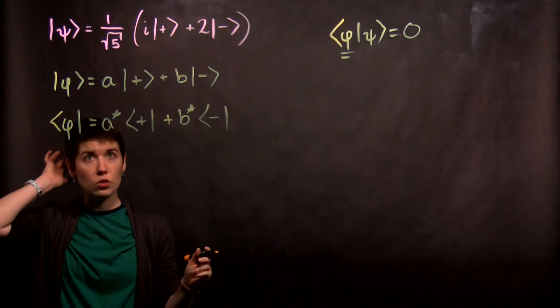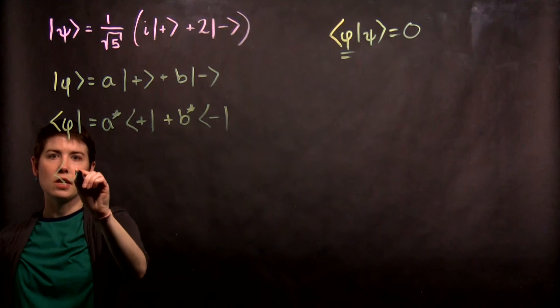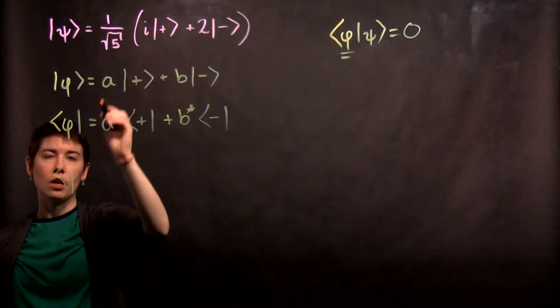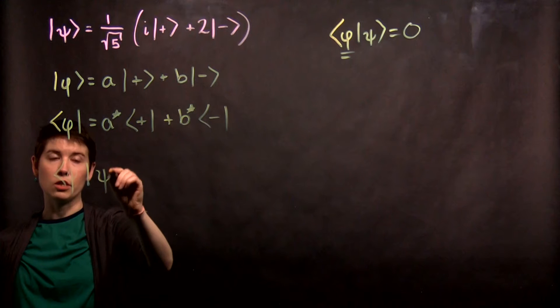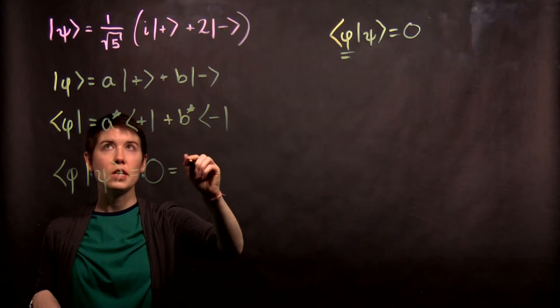And so now we're going to go ahead and do this calculation out. So when I say that my overlap here, my inner product, is equal to 0, we then expand it in these basis states.